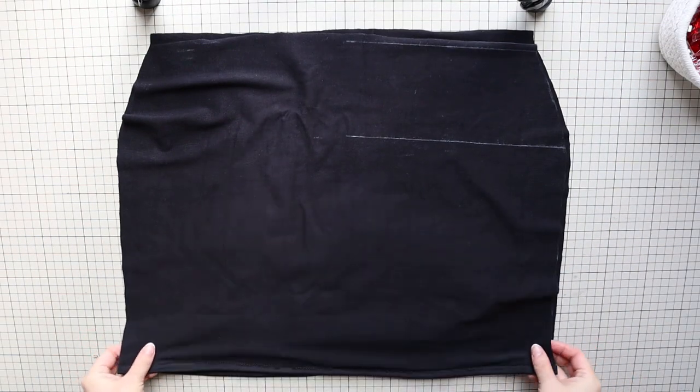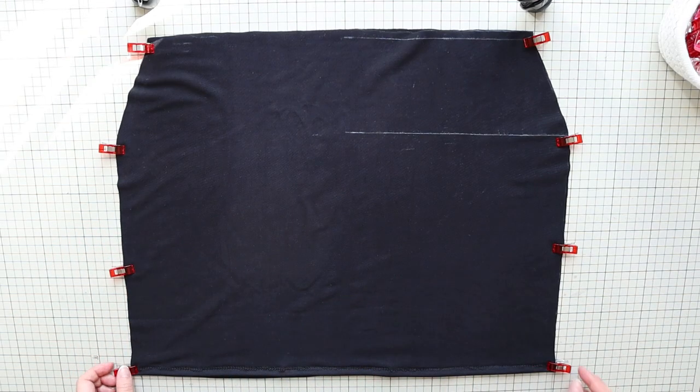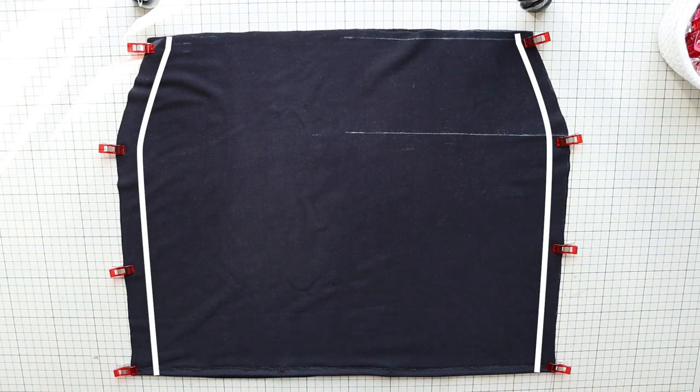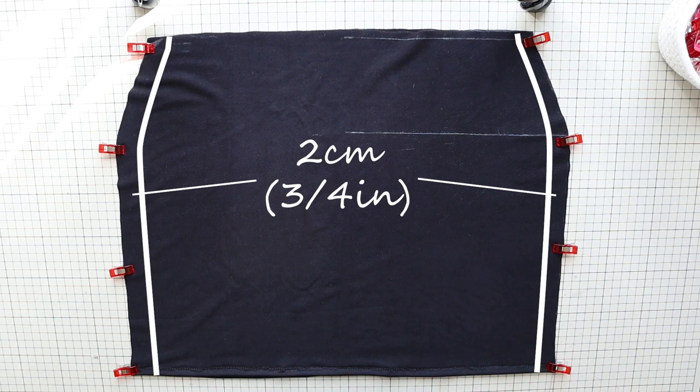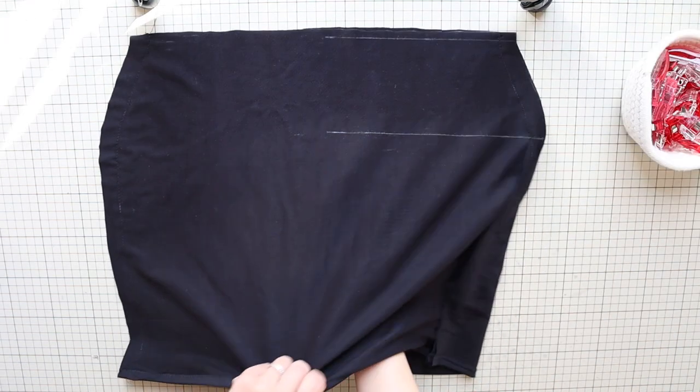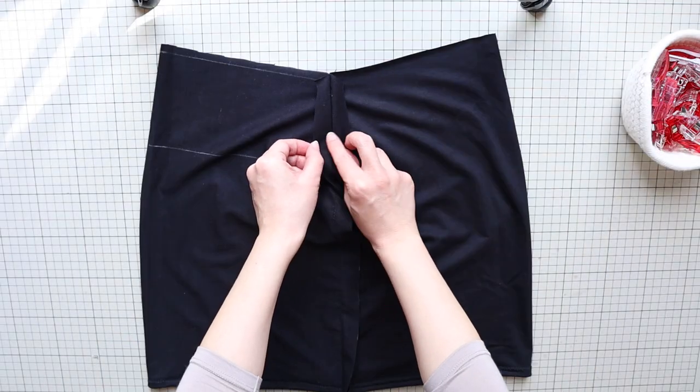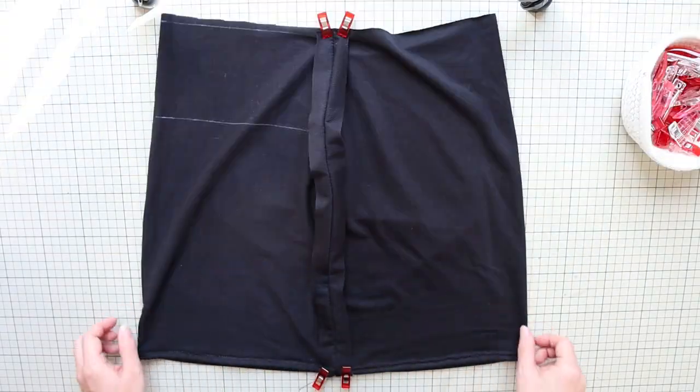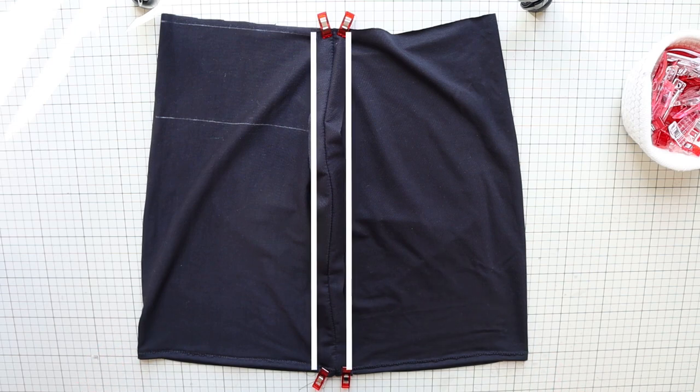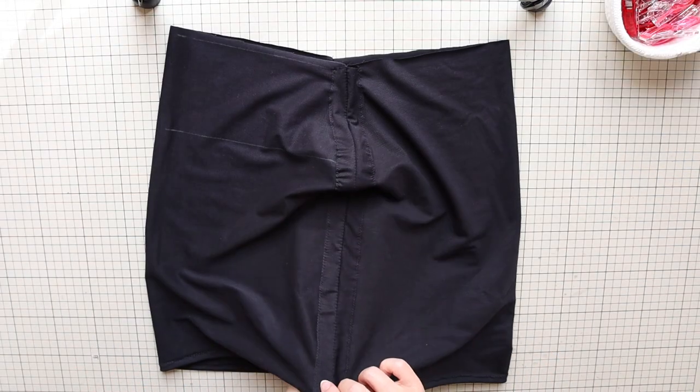Then place the panels right sides together. Do a narrow zigzag stitch with a 2 centimeter or 3 quarters of an inch seam allowance along side seams. Then at each seam, fold the seam allowance flat like this and do a narrow zigzag stitch right next to the raw edges. This creates channels for the ties.